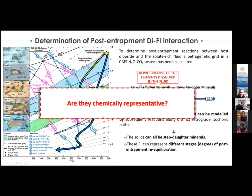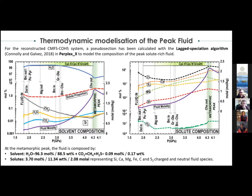We still needed to assess whether the measured fluid composition of these fluid inclusions is chemically representative of the original trapped fluid. For this reason, we integrated constraints derived from fluid inclusions — such as graphite and carbonate inclusions, the presence of sulfides, and the presence of methane — to reconstruct the bulk composition of the system and, most importantly, its redox conditions, in order to model the composition of the peak fluid using a pseudosection.